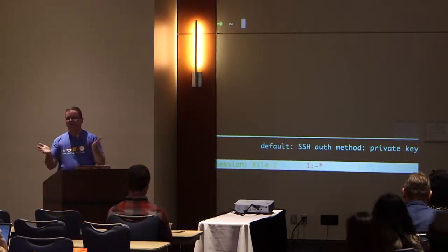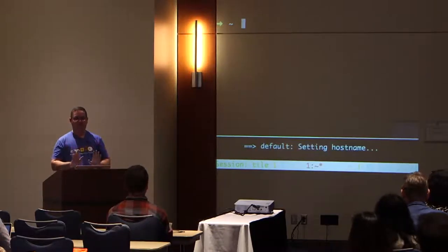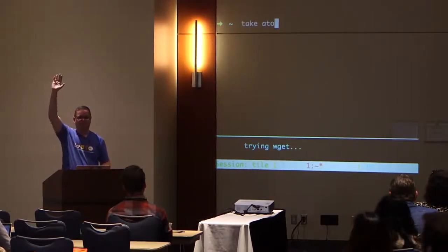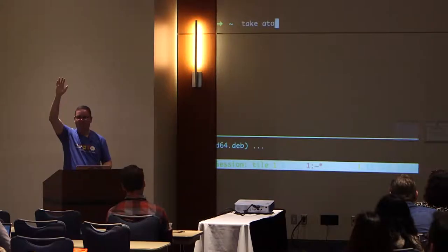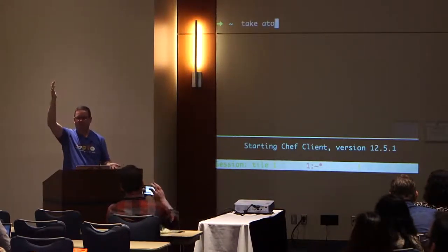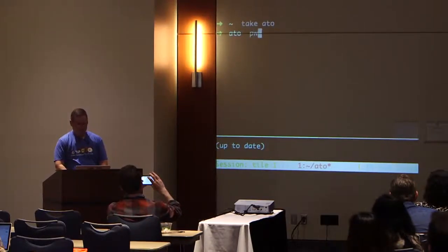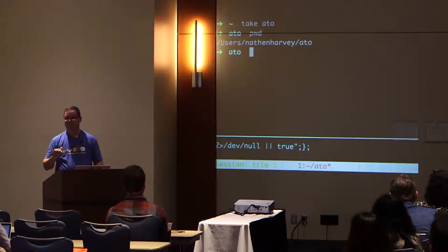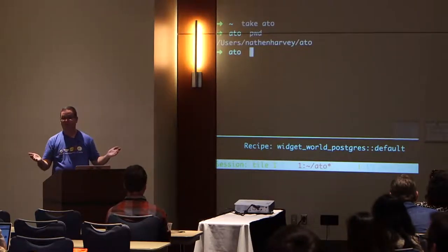Let's create this thing where we can build our Rails application. The first thing I'm going to do — watch this command — 'take ATO.' Who's run the take command before? If you run Zshell with the ohmyzsh plugin, watch what happens: 'take ATO.' It created the directory and then moved me into it — it did a mkdir and a cd all in one command. If you're using Zshell and ohmyzsh and you learned that, you just got your money's worth.